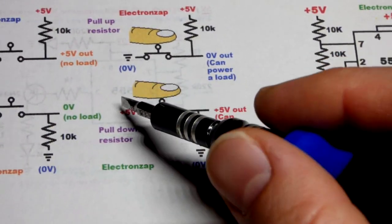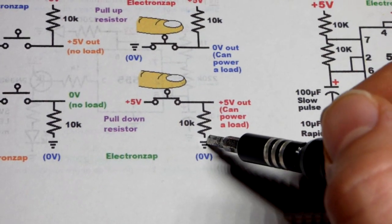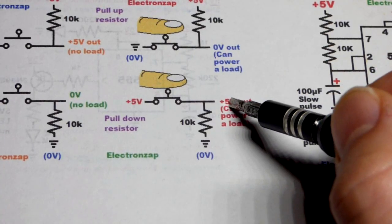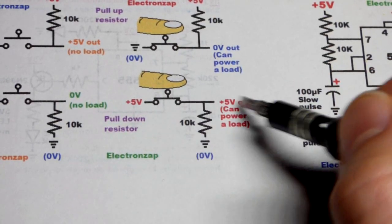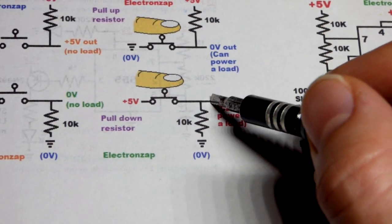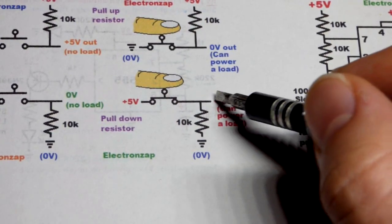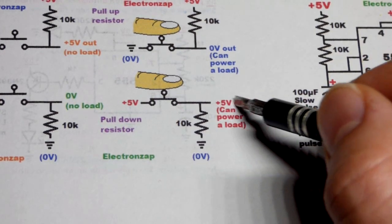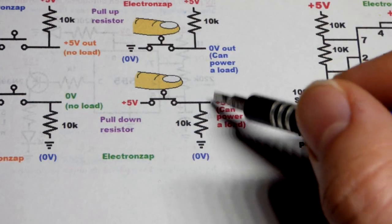You close the switch, direct connection to the 5 volts right there. So even though you've got ground, a little bit of current is going to come down here. But that's a direct connection to 5 volts. So basically, you have a full 5 volts coming out. You could also have a load. So it's probably an input that's looking at voltages, but you may also have a load that you can power when you do so.